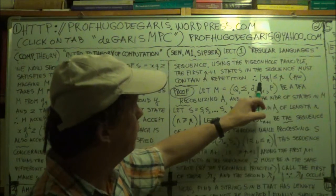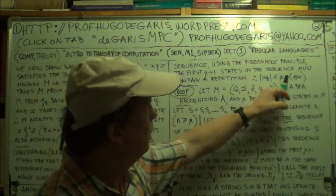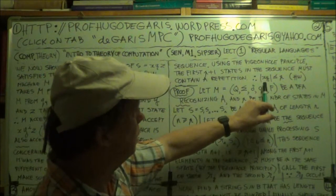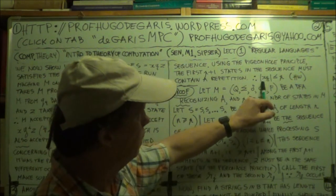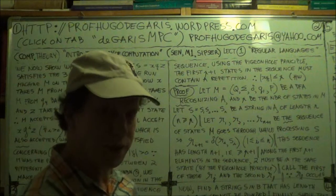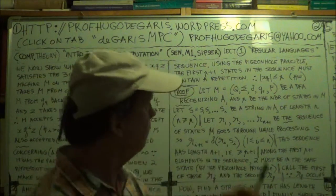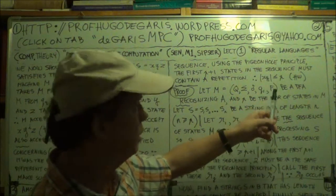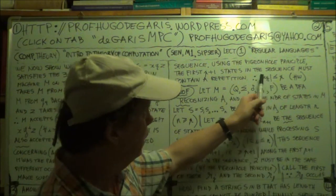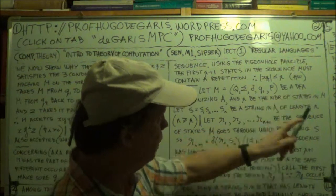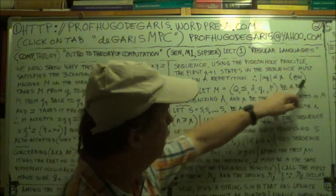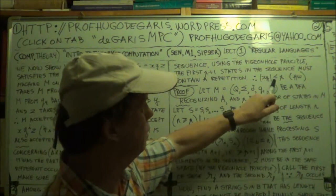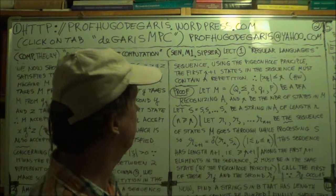As homework, Sipsa just throws this at you. From this deduction, he says the length of the two substrings X, Y concatenated — the length of them — must be less or equal to P. So he asks you to prove that for homework. He doesn't prove it, he just throws it at you. So there's an intellectual challenge — work it out.